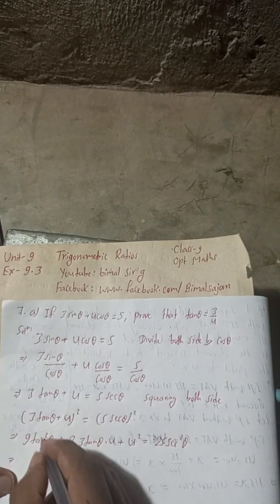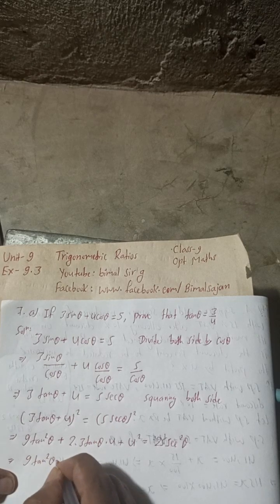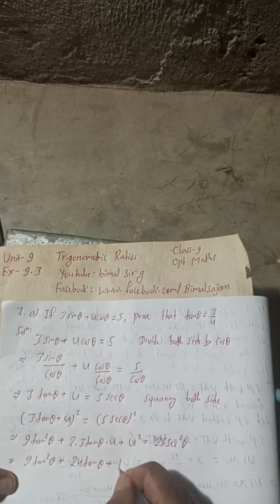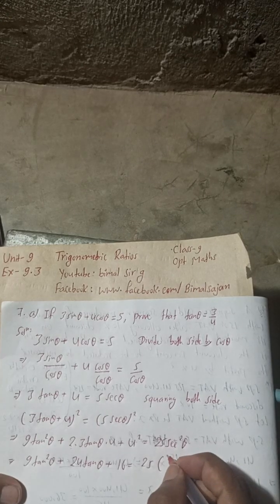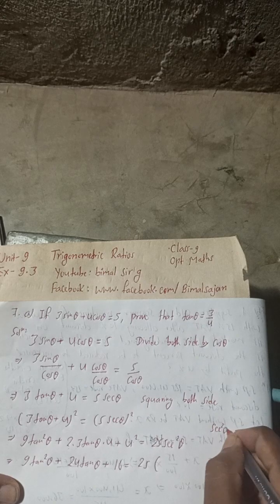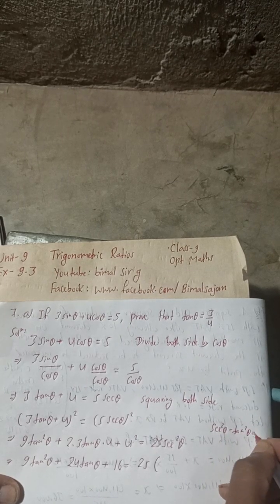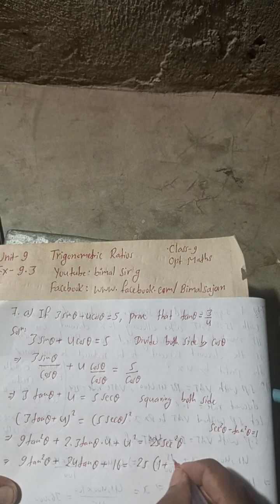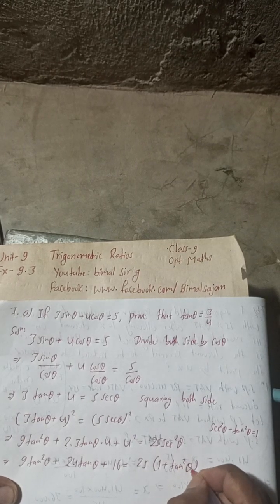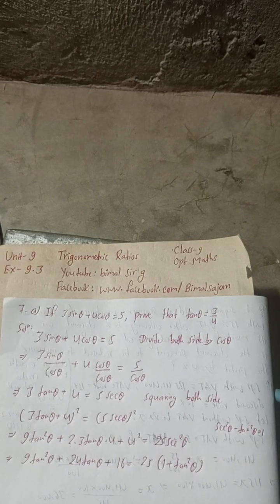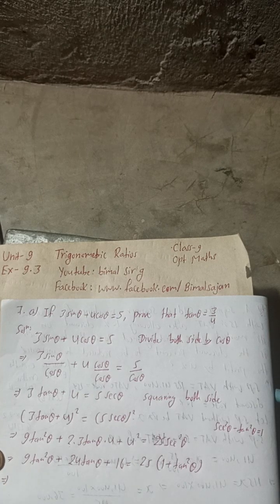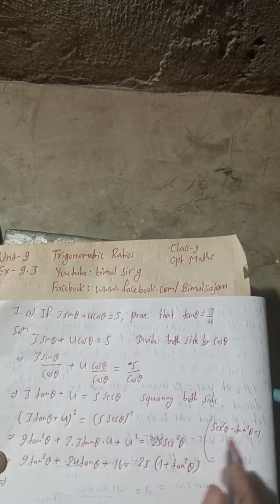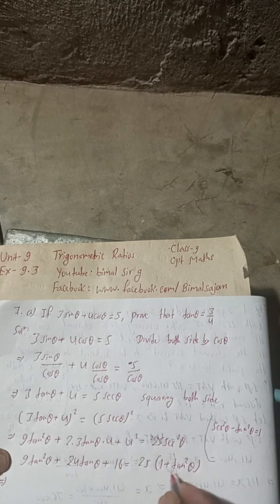Expanding the left side: 9 tan² θ plus 24 tan θ plus 16 equals 25 sec² θ. Now we use the identity sec² θ minus tan² θ equals 1, so sec² θ equals 1 plus tan² θ. Substituting this in: 9 tan² θ plus 24 tan θ plus 16 equals 25(1 plus tan² θ).